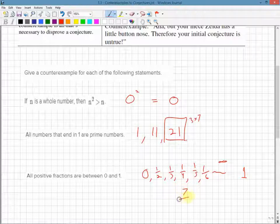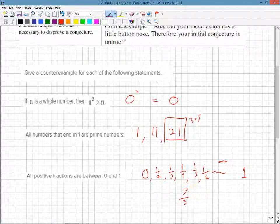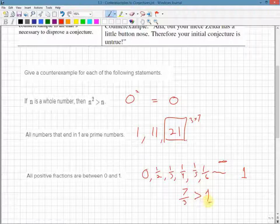However, you can write fractions like this: 7 over 3. That's not between 0 and 1. That's actually greater than 1. So all you need is one counterexample to prove that that statement is, in fact, false.